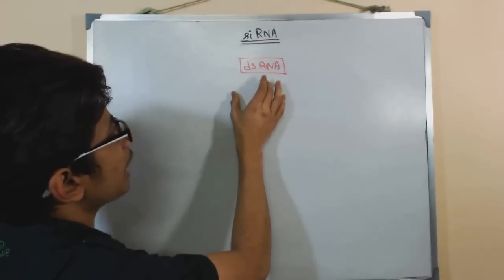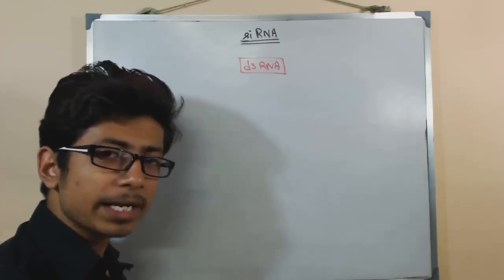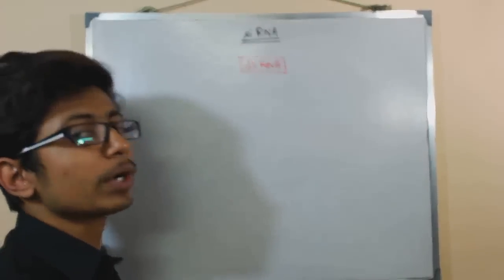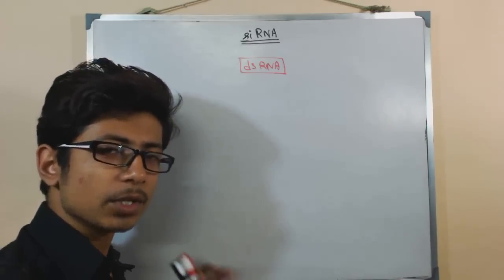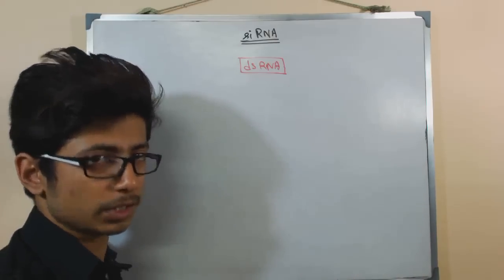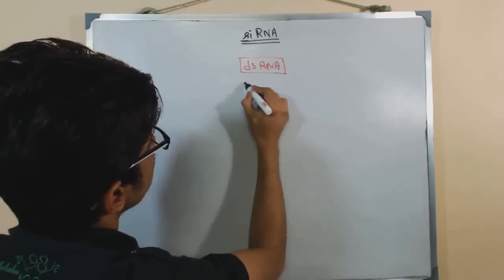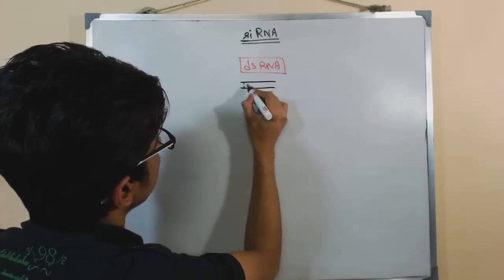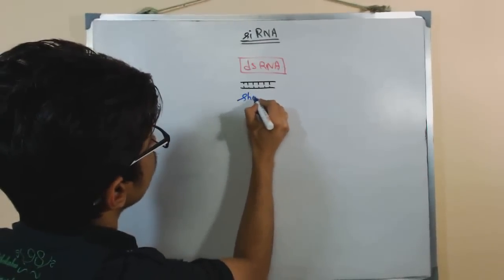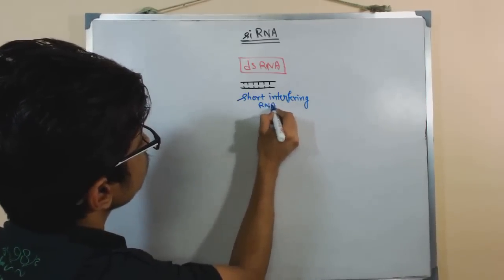Looking at the double-stranded RNA: by any means of obtaining dsRNA, it can form microRNA, short hairpin RNA or shRNA, or short interfering RNA or siRNA. We've already discussed microRNA, which is longer and forms a stem-loop structure, and shRNA, which also has a hairpin structure. But in the case of siRNA, short interfering RNA, the structure is very simple — it is just a basic double-stranded RNA structure.